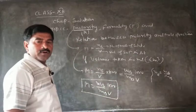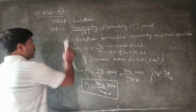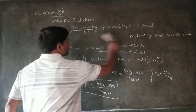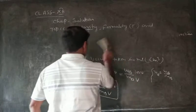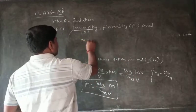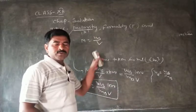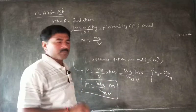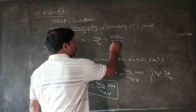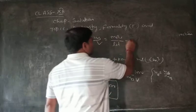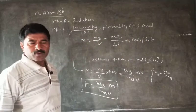Therefore, the unit of molarity is mol per liter. When the number of moles of solute present in 1 liter of solution is known as molarity, NB has units of mole and volume has units of liter, giving mol per liter. Molarity is also known as concentration.